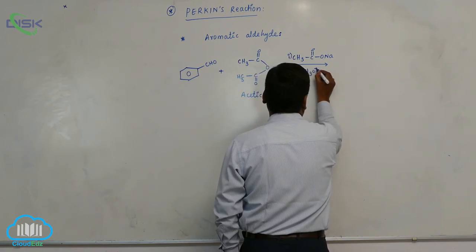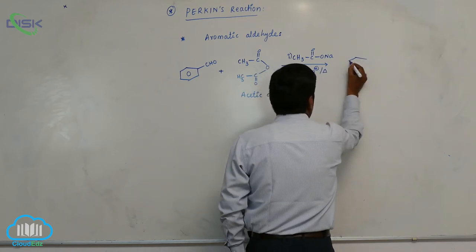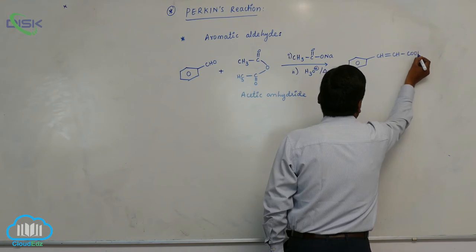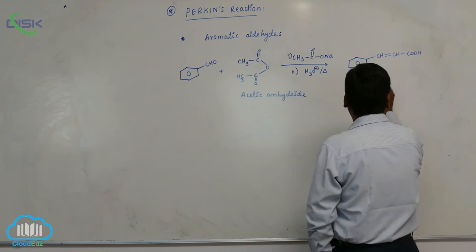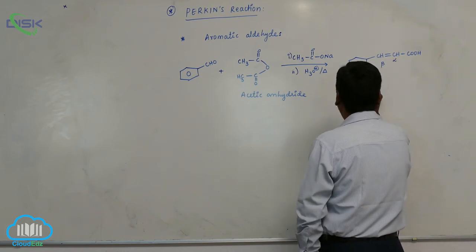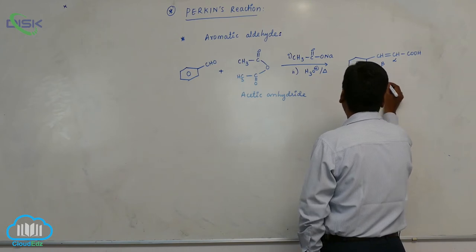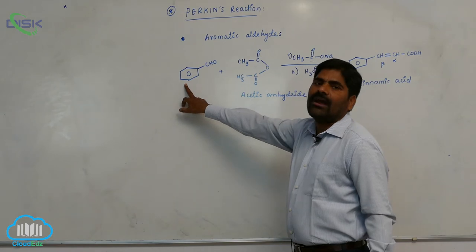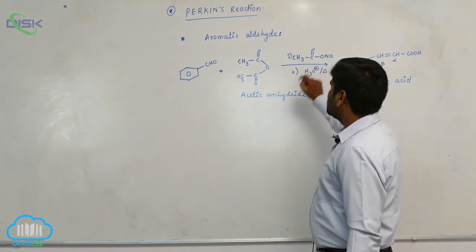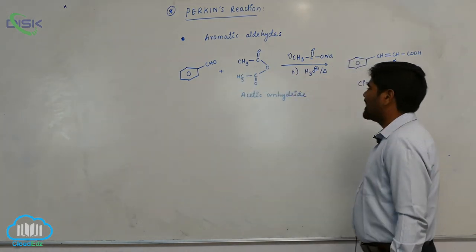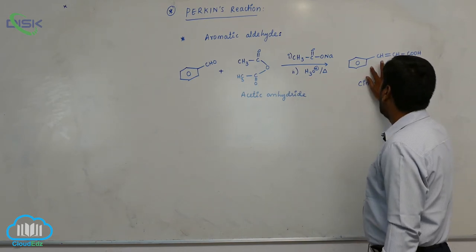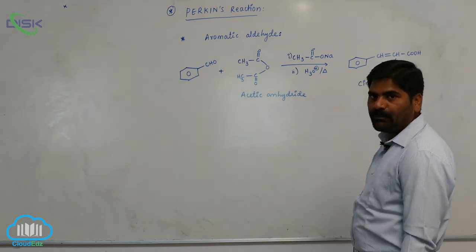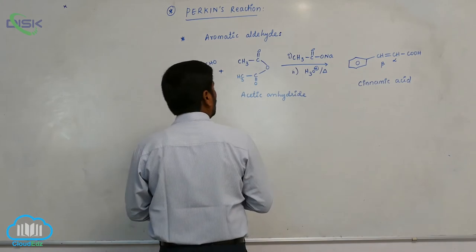The second step is hydrolysis followed by heating to form an alpha, beta-unsaturated aromatic carboxylic acid known as cinnamic acid. So benzaldehyde reacts with acetic anhydride in presence of sodium acetate, followed by acidic hydrolysis and heating to form alpha, beta-unsaturated carboxylic acid. This reaction is known as Perkin reaction.